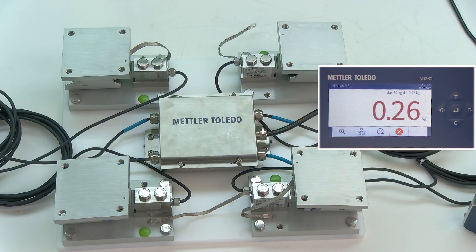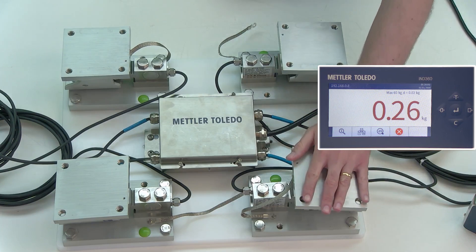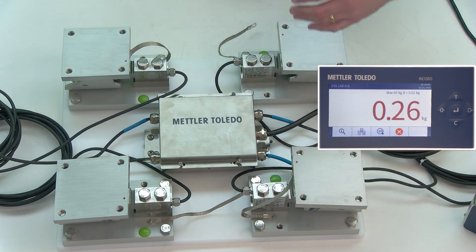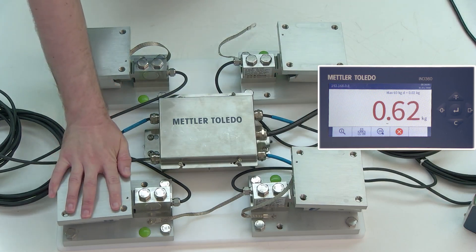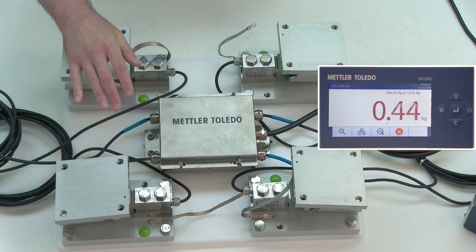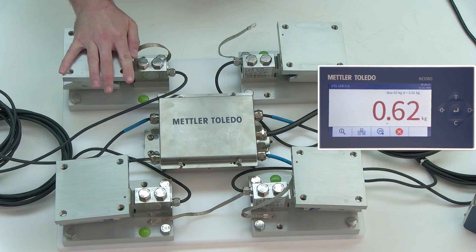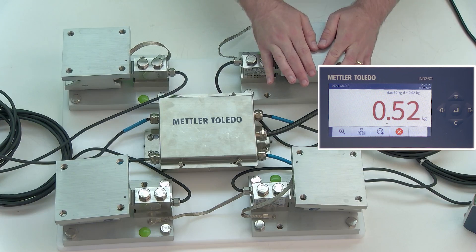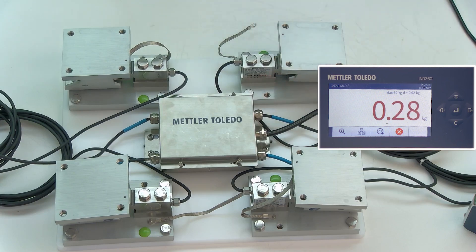Now that the IND 360 has powered up, we're going to do a quick check to make sure everything is registering correctly. I'm going to apply weight on each of the weigh modules. What I'm looking for is seeing that the weight value on the IND 360 goes up. We have not performed any adjustments, so I don't care about the actual value, just that it's increasing. We can see that's the case for all four load cells.